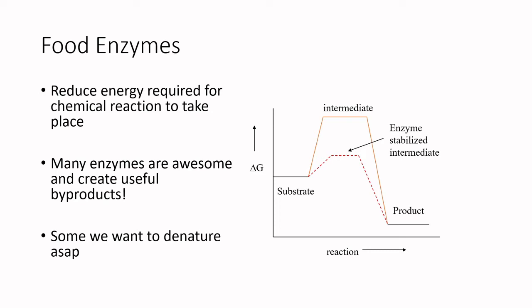In essence, the enzyme holds the key molecules involved in a chemical reaction in a way that decreases the energy necessary for the reaction to occur. When we say delta G, we're looking at Gibbs free energy — the amount of energy necessary for a chemical reaction to occur. In a normal situation, the free energy necessary would be quite high.